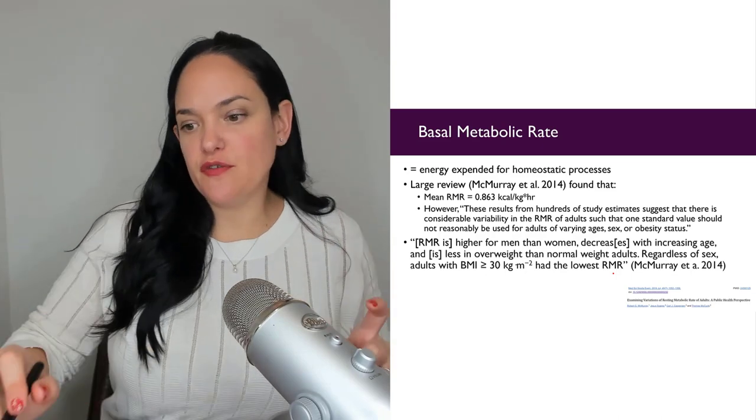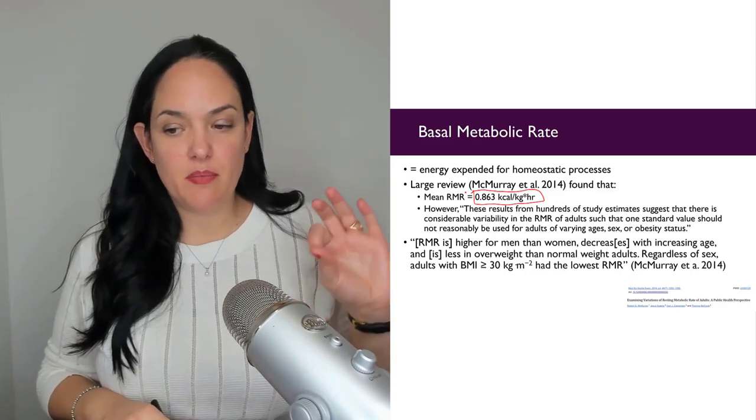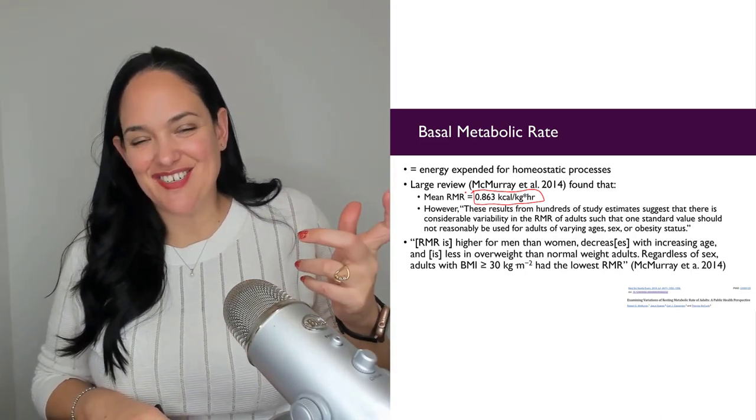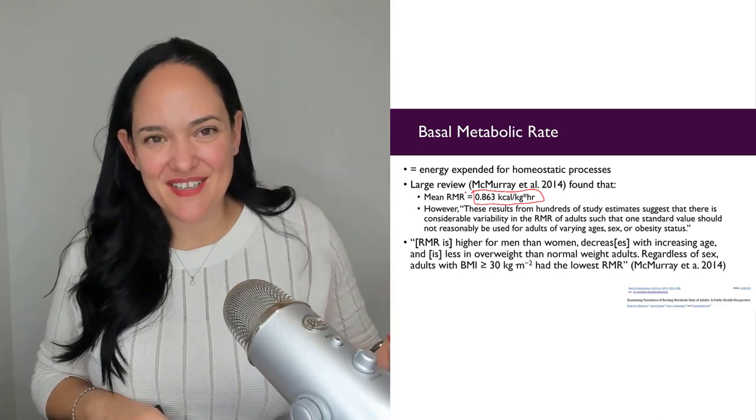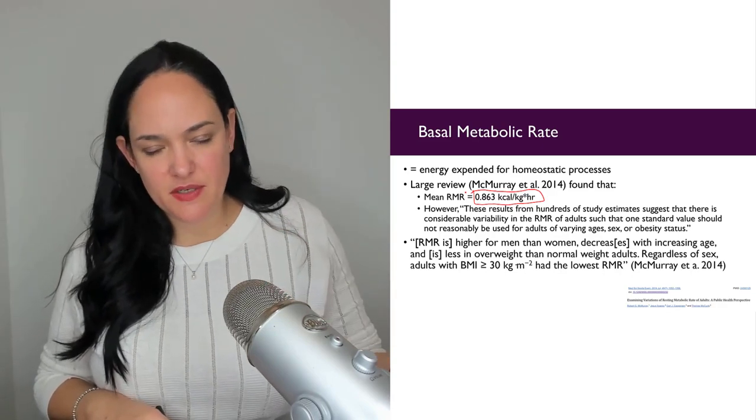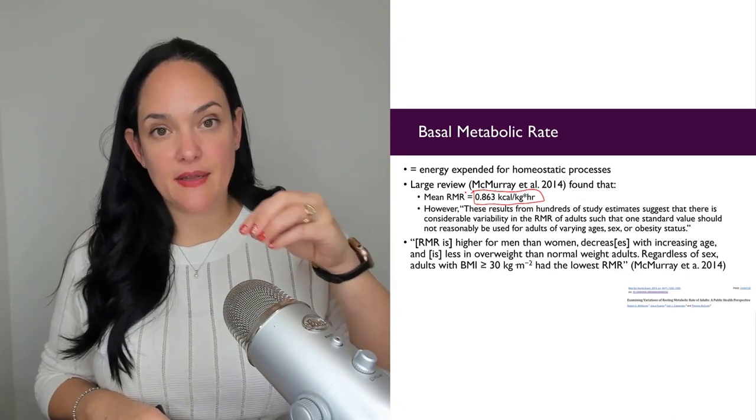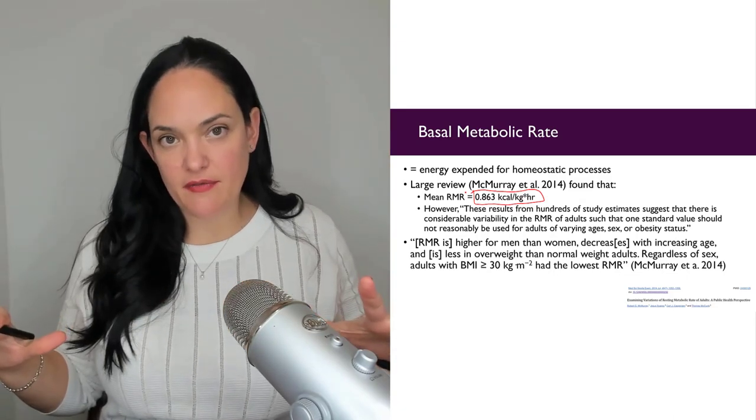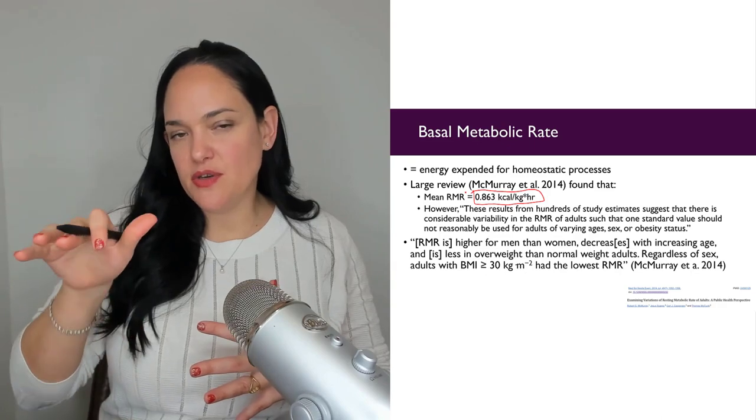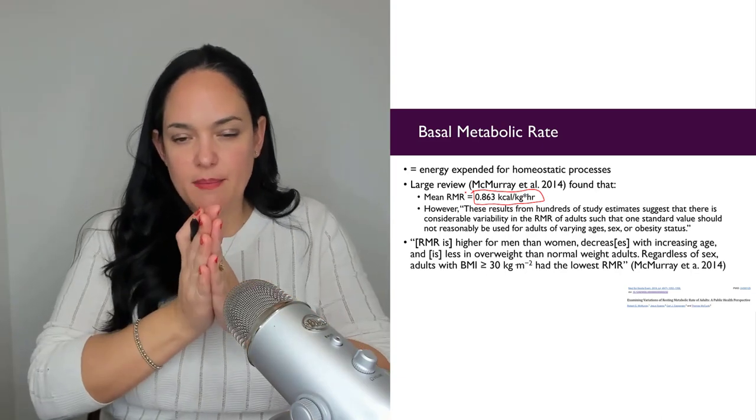In general, a large review from 2014 suggested that the average BMR of humans is about 0.863 kilocalories per kilogram per hour. So just to use simple math here, in a 100 kilogram person, which is over 200 pounds, but just to be simple here, in a 100 kilogram person, they're going to be burning about 86 kilocalories per hour just to keep the body alive. And of course, that is going to vary. So the authors of this paper really made a point to say that you can't just use this number, there's large variations, people are going to be very different. This is not a number that you can just apply to everyone, because basal metabolic rate is dependent on many factors.